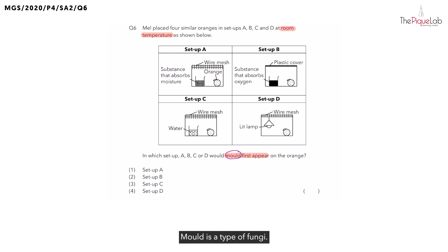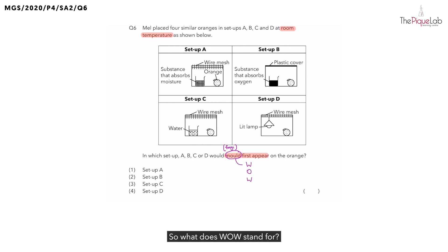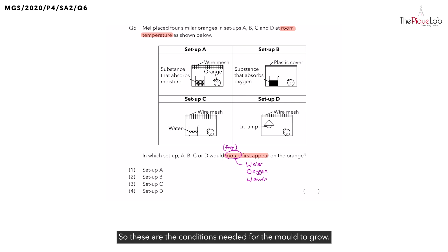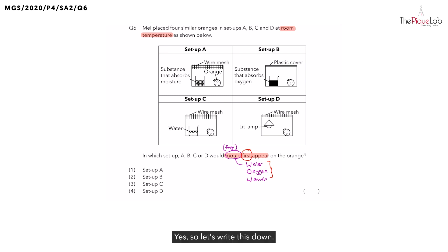Before we take a look at the setups, let's recall — mold belongs to which group of living things? Mold is a type of fungi, and remember, in order for fungi to grow it needs three conditions. There's a very easy way to remember: fungi needs WOW to grow. W stands for water, O is oxygen, and the last W is warmth. These are the conditions needed for mold to grow. For the mold to first appear on the orange, all three conditions must be present.